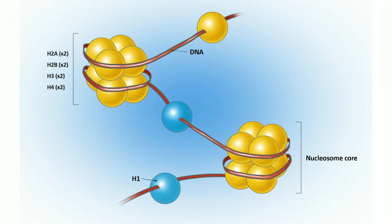Moving down the DNA you come to another nucleosome — it's like beads on a string where the nucleosomes are the beads. Histone H1 is the only histone not in the nucleosome core; H1 ties one nucleosome to the next. That whole structure is chromatin, which helps pack a lot of DNA into a relatively small space.